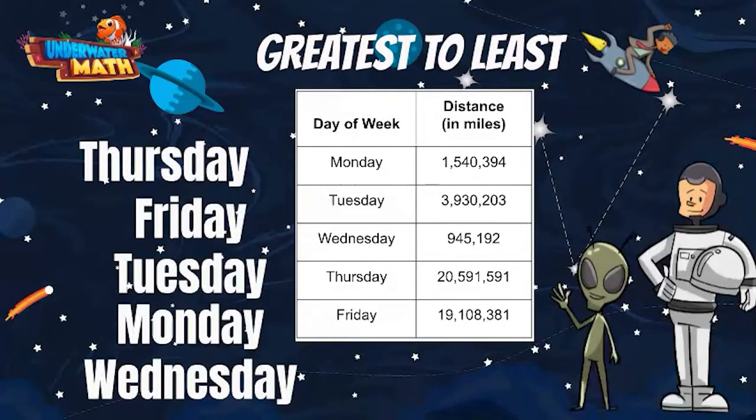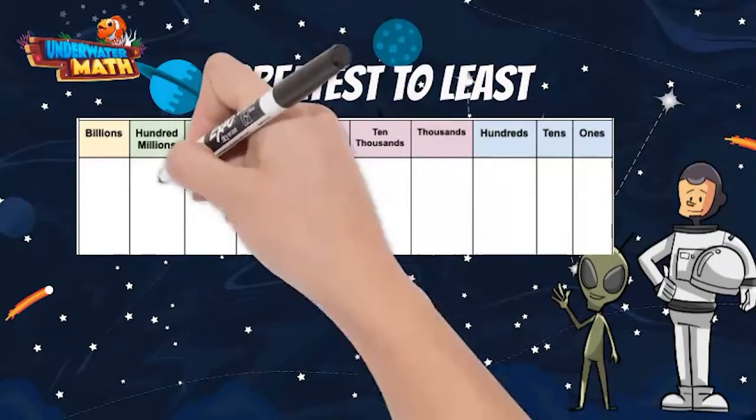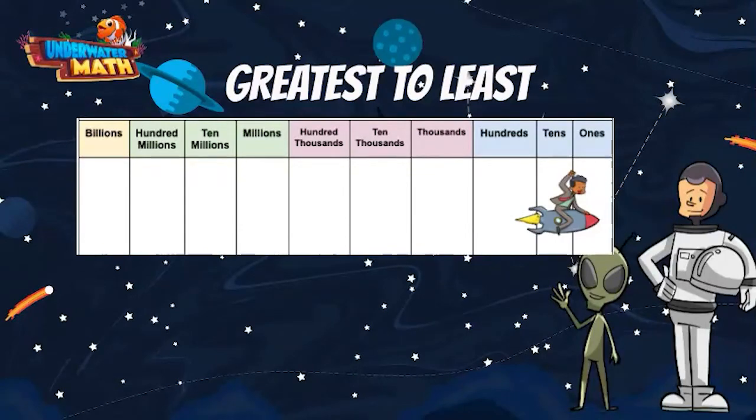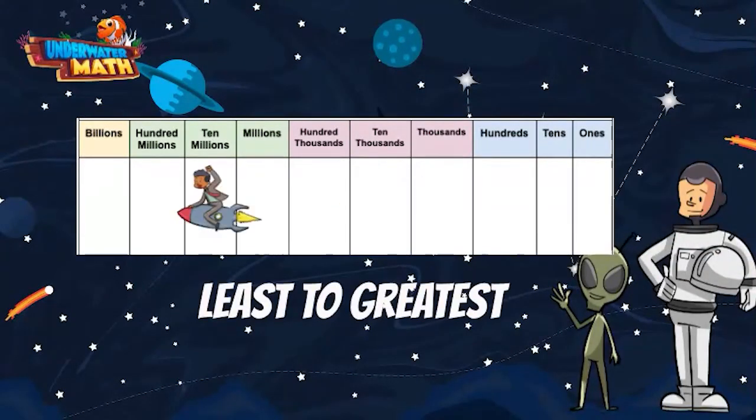To recap what we have learned, we can use place value to help us put numbers in order. As you move from left to right on the place value chart, numbers become smaller. As you move right on the place value chart, numbers become larger. Great job and have fun practicing.